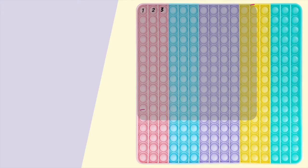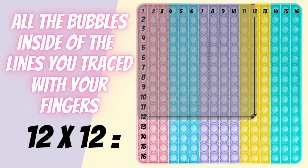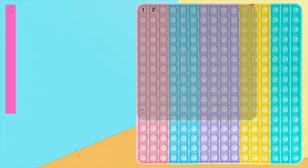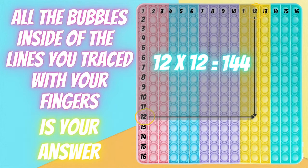And that is where we will write our answer, but also inside of the lines that you traced with your fingers. If you were to count the bubbles inside, you would find that there is 144 bubbles, which is the answer to your multiplication problem.